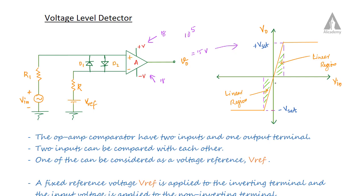The output saturates at plus Vsat or minus Vsat. When the operational amplifier input voltage is zero, the output is at saturation. If the input voltage exceeds the reference, the output goes to positive saturation. If it is less, the output goes to negative saturation. This describes the saturation region and the linear region of the operational amplifier.